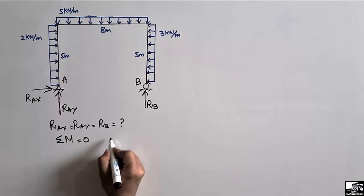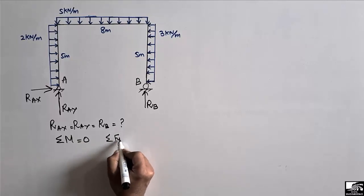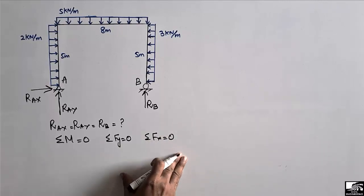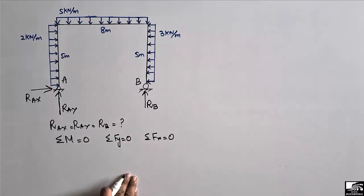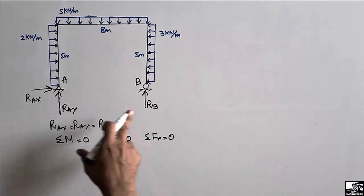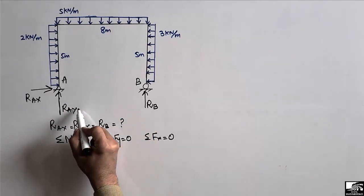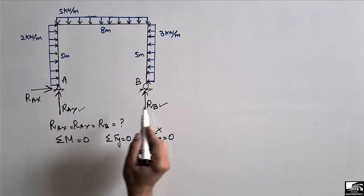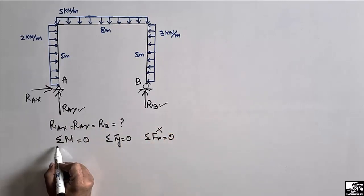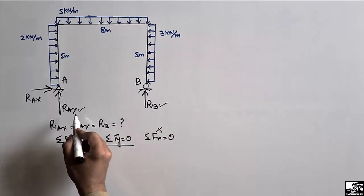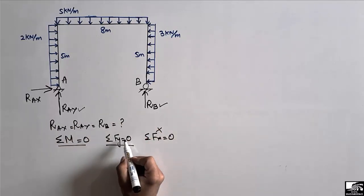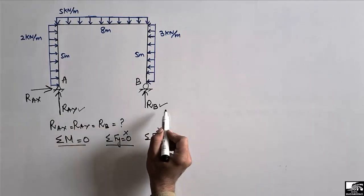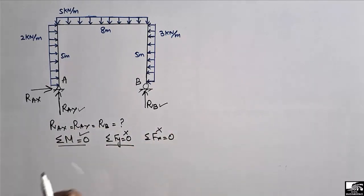To find these three reactions, we use the equilibrium equations: summation of moments at any point equal to zero, summation of vertical forces equal to zero, and summation of horizontal forces equal to zero. To find the vertical reactions RAY and RB, we cannot directly use the vertical force equation since there are two unknowns — that equation works only when there is one unknown.